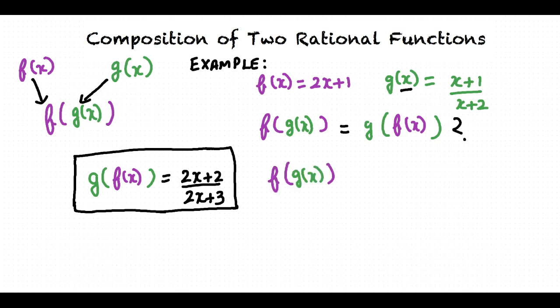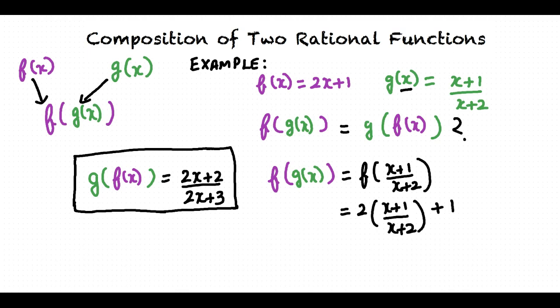Let us now evaluate f of g of x. Following the same technique, in order to find f of g of x, we replace x in f of x by g of x. Thus, f of g of x equals f of x plus 1 over x plus 2, since g of x is x plus 1 over x plus 2. Replacing x in f of x by x plus 1 over x plus 2, we get f of g of x equals 2 times x plus 1 over x plus 2, plus 1.